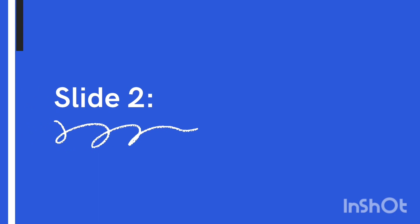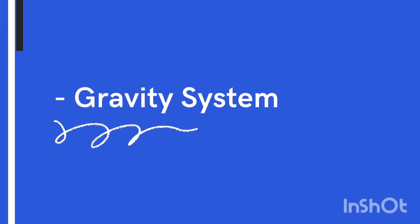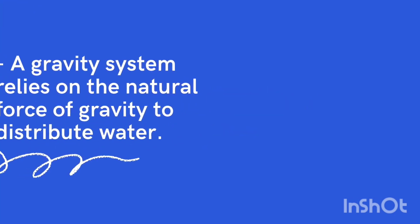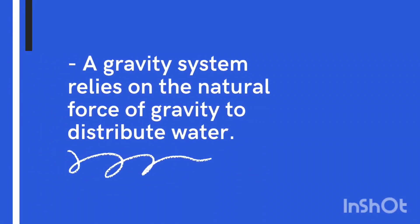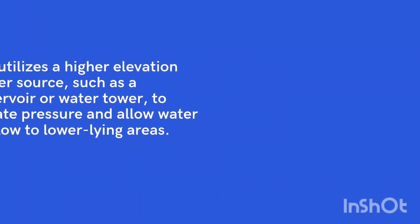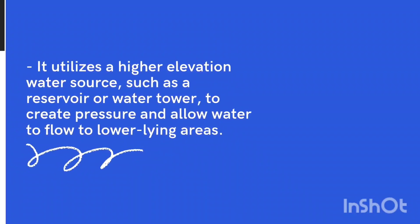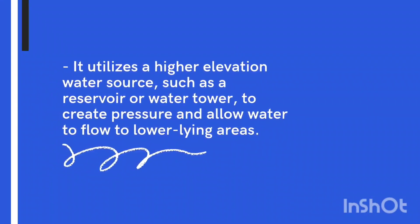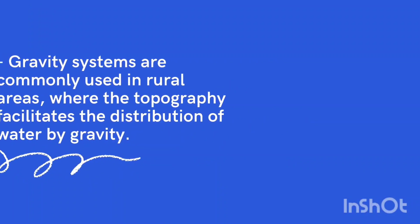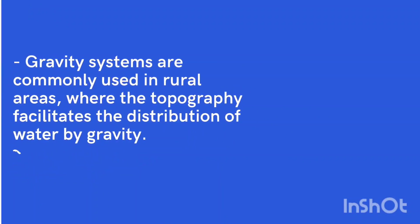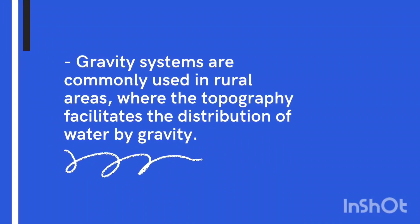A gravity system relies on the natural force of gravity to distribute water. It utilizes a higher elevation water source, such as a reservoir or water tower, to create pressure and allow water to flow to lower-lying areas. Gravity systems are commonly used in rural areas, where the topography facilitates the distribution of water by gravity.